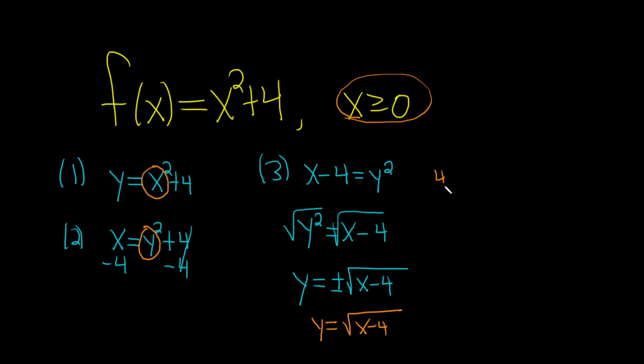The last step is to rename our y using the proper notation for the inverse function, which is f inverse of x. And so this is equal to the square root of x minus 4. And that would be the final answer.